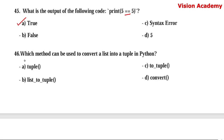Question number 46. Which method can be used to convert a list into a tuple in Python? Option A: tuple(). Option B: list_to_tuple. Option C: to_tuple. Option D: convert. Here, option A — tuple() — is the right answer.